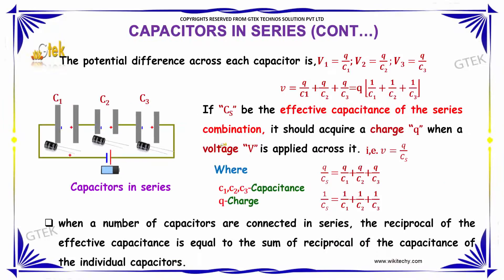The potential difference across each capacitor is V1 = Q/C1, V2 = Q/C2, and V3 = Q/C3. Summing these values, we have V = Q/C1 + Q/C2 + Q/C3.